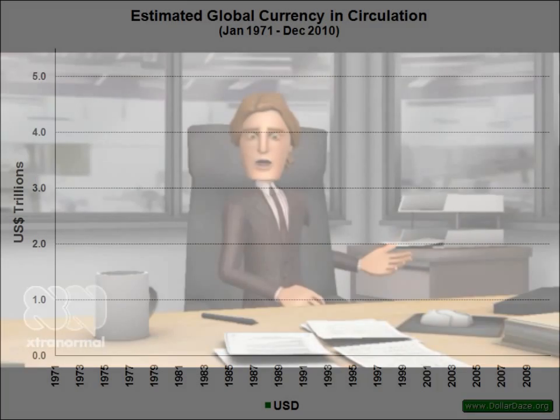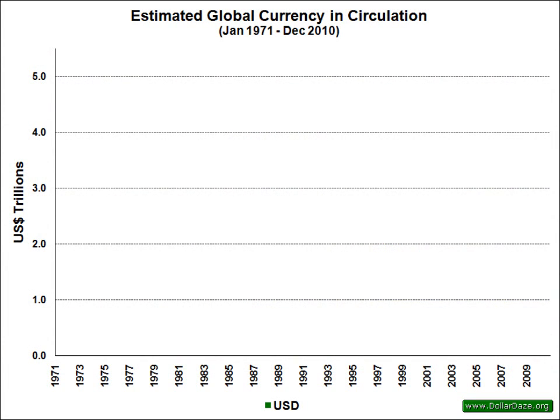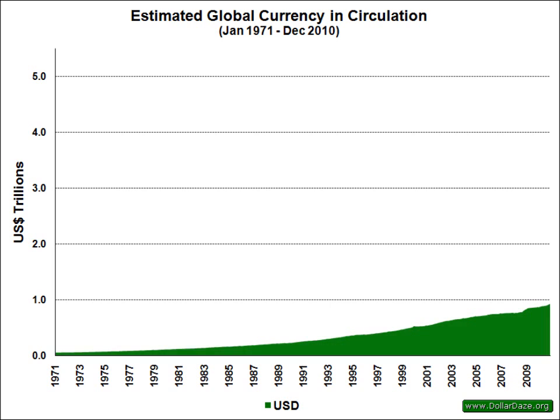Here is a chart showing a timeline from 1971 to the end of 2010. Along the vertical axis is a dollar figure. The first currency shown is the U.S. dollar. By the end of 2010, there was 920 billion in U.S. dollars, and it is estimated that perhaps up to two-thirds of this circulates outside the borders of the United States.